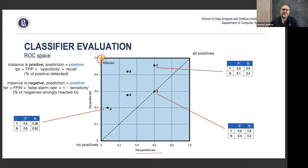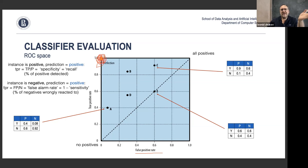The perfect situation is zero false positives and 100% true positives — whenever we predict something, it really happens, and we never predict something that doesn't happen. Classifiers can be placed anywhere on this plot depending on their rates. Consider a fire alarm: true positive means the alarm went off and there really was a fire; false positive is a false alarm — no fire but the alarm went off.